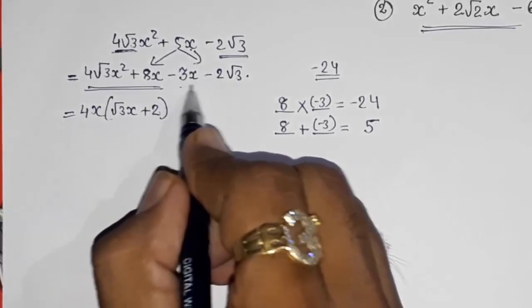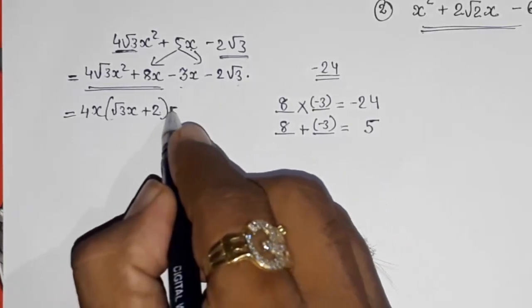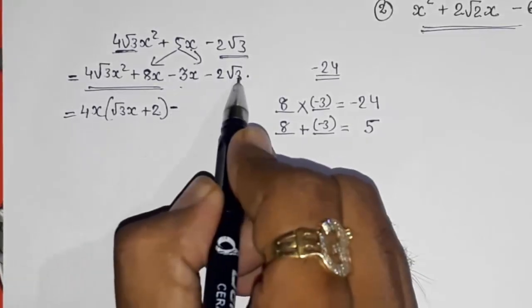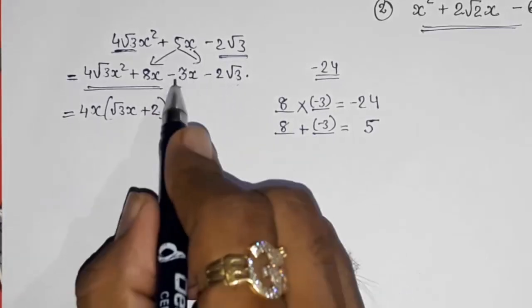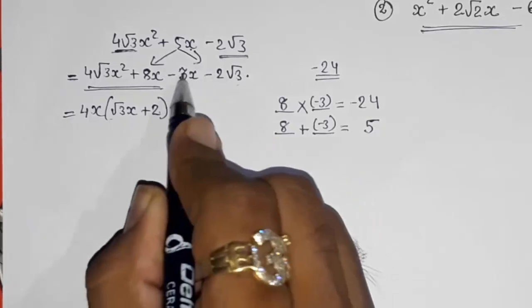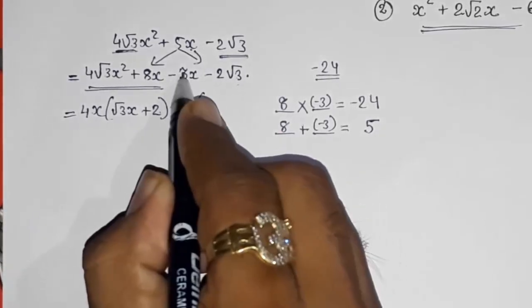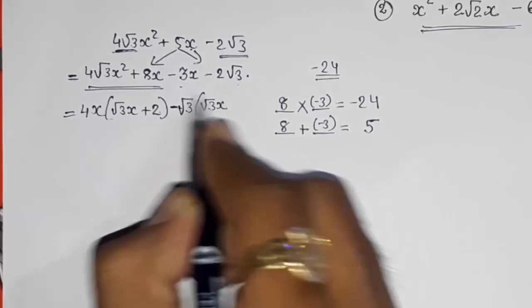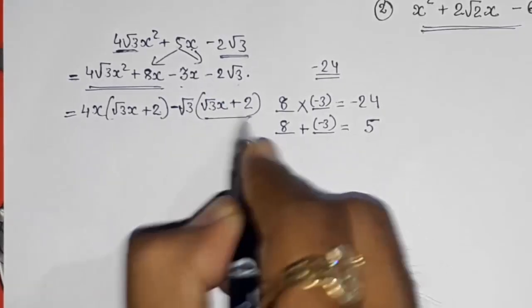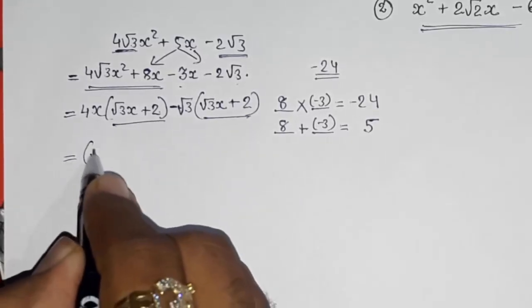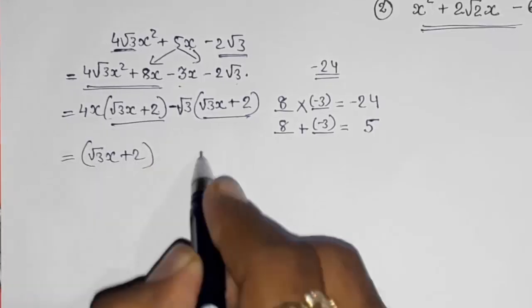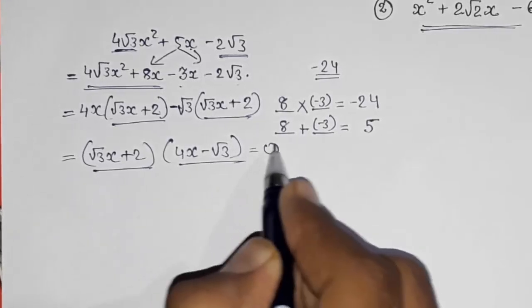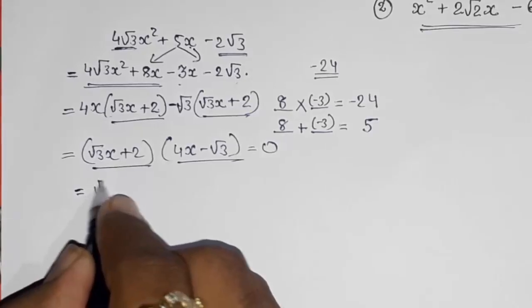From the last two terms, we take out minus because we want a plus sign inside the bracket to match. Since 3 = √3 × √3, we can take out √3 as common. After taking out −√3, one √3 is gone and one √3 remains, giving −√3(√3x + 2). Now both factors are the same: (√3x + 2), giving the full factorization (√3x + 2)(4x − √3).